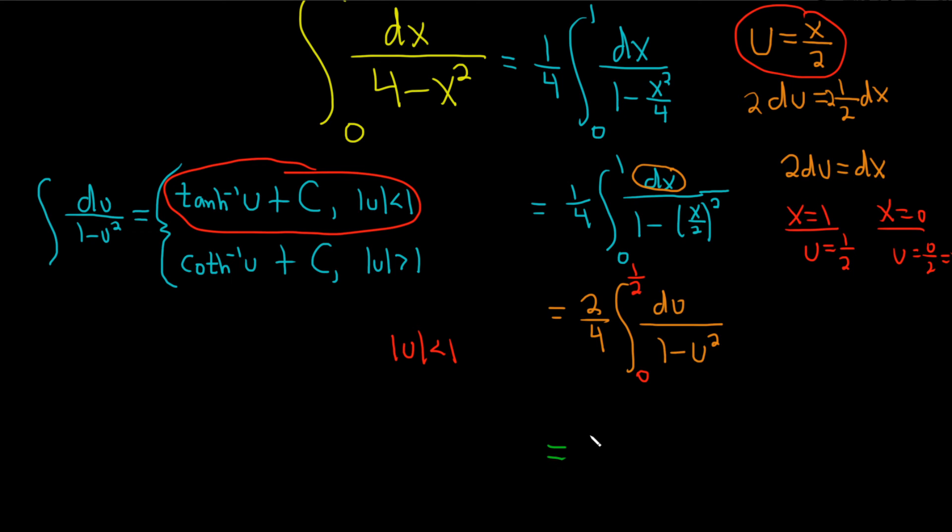So this is equal to 1 half. And then we have the inverse of the hyperbolic tangent of u. And we don't need C because this is a definite integral. So instead, I'll insert a bracket. And just to be really clear, I'm going to specify that these are actually u values. So u equals 0 and u equals 1 half.